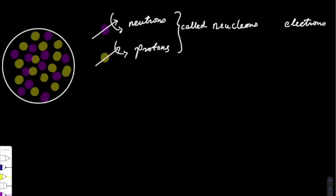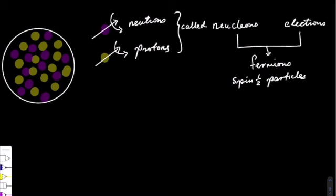The nucleons and electrons are from a group of particles or elementary particles called fermions. These fermions are spin-half particles.